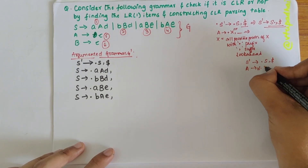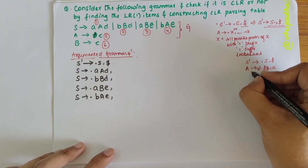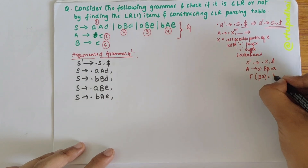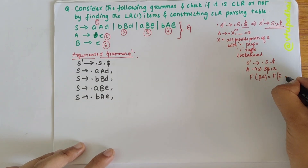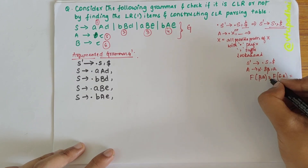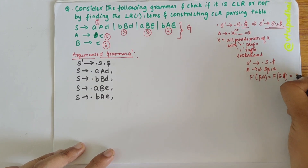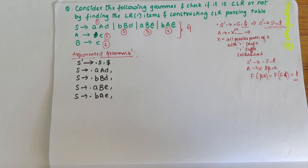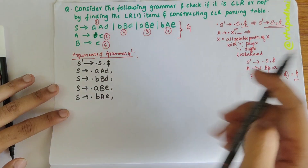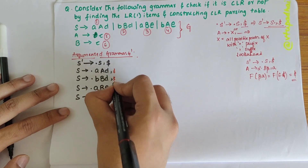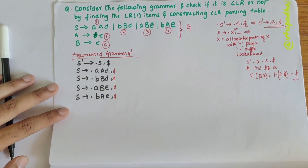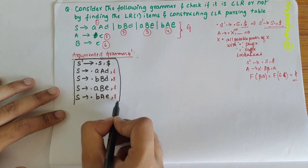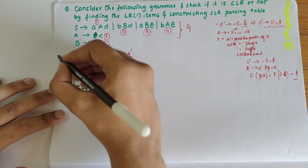Comparing with A → α•Bβ, a, I should find FIRST(β) and a. Here FIRST(β) would be ε and a would be $, so FIRST of these two gives dollar. So for all productions derived from S in I0, I should write dollar as the lookahead. I'll name this item set as I0.